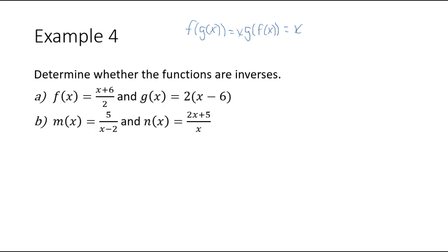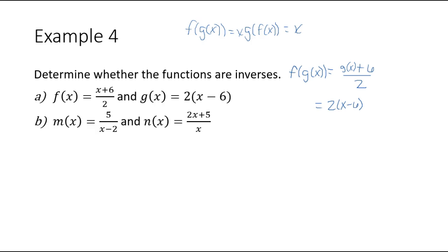The first thing I'm going to do is find f of g of x. My f function is x plus 6 divided by 2, but I am going to take out the x and replace it with the g function, so that it looks like 2 times the quantity x minus 6, which is my g function, and then plus 6 divided by 2.